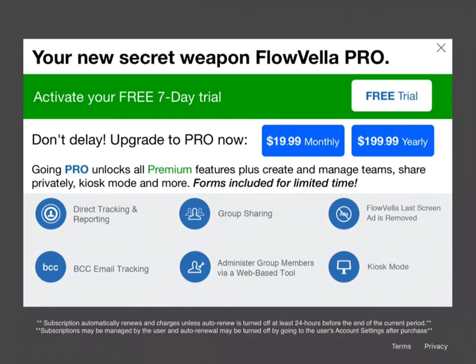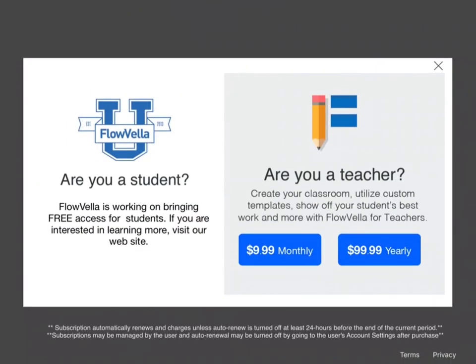You can activate a free seven-day trial for pro. It includes direct tracking and reporting, BCC email tracking, group sharing, and admin group members via a web-based tool. The Flowvella last screen ad is removed, and kiosk mode is included. There's also an educational version — students get free access. Teachers can pay $10 monthly or $100 yearly, and can create a classroom, utilize custom templates, and show off students' best work with Flowvella for teachers.